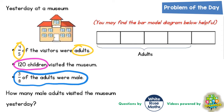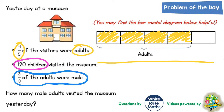It says you may find the bar model diagram helpful. So let's take the first clue: four-fifths of the visitors were adults. As you can see on the bar model, there are five sections, and it is already telling us that the first four sections are adults. The whole bar represents all of the visitors, and all of the visitors is the adults plus the children, so this section on the end must be the children.